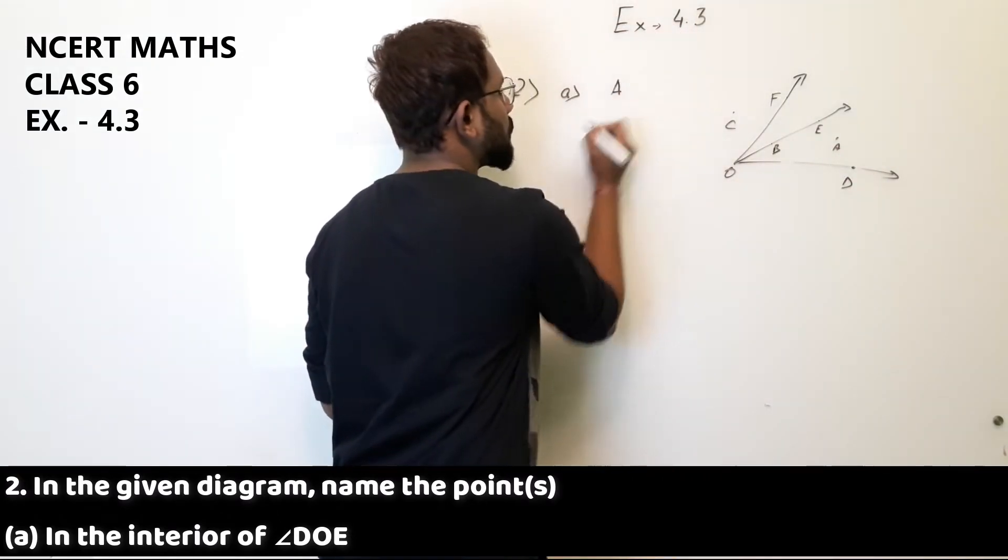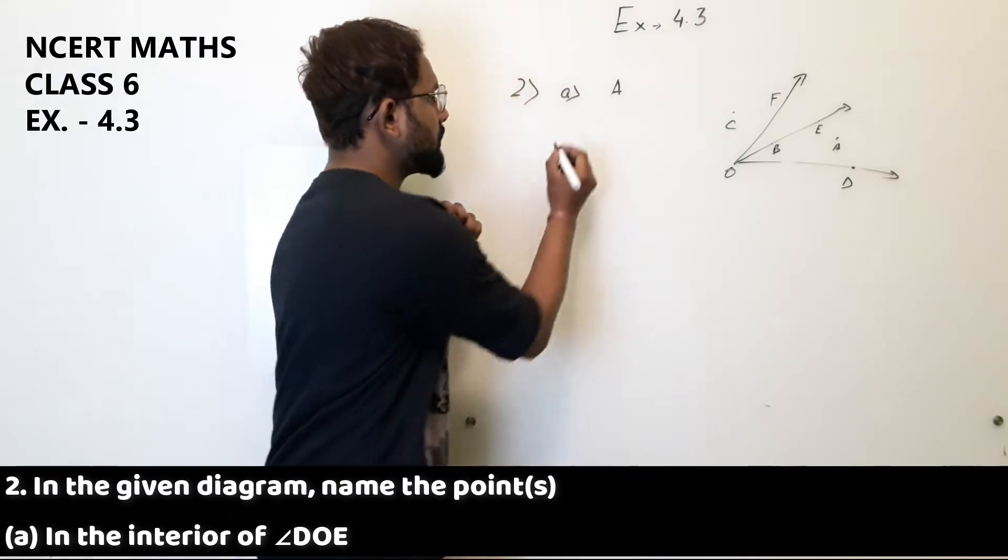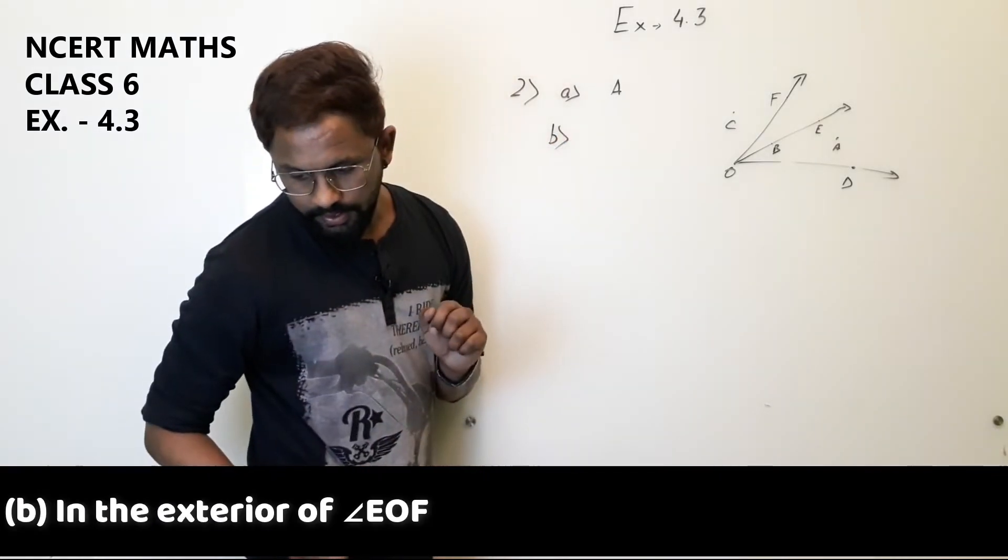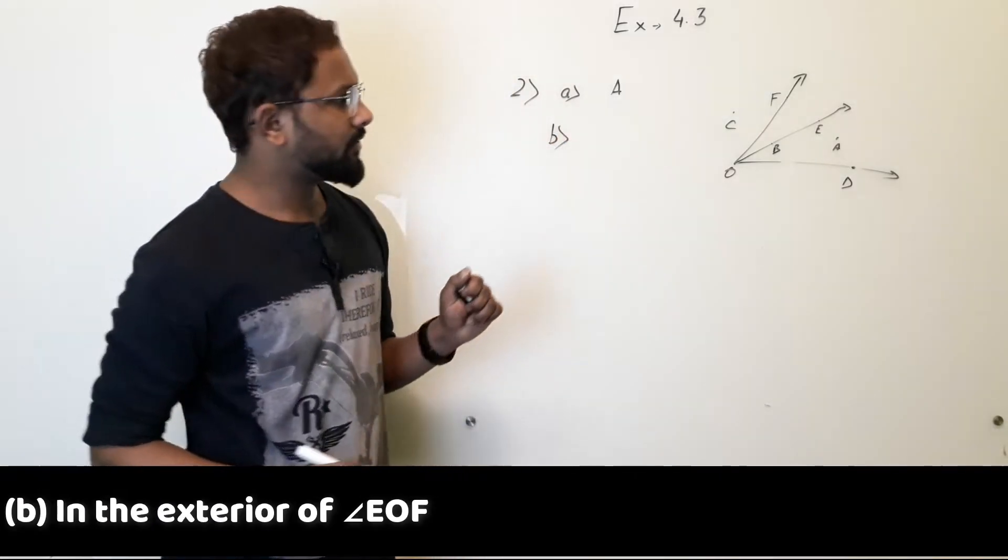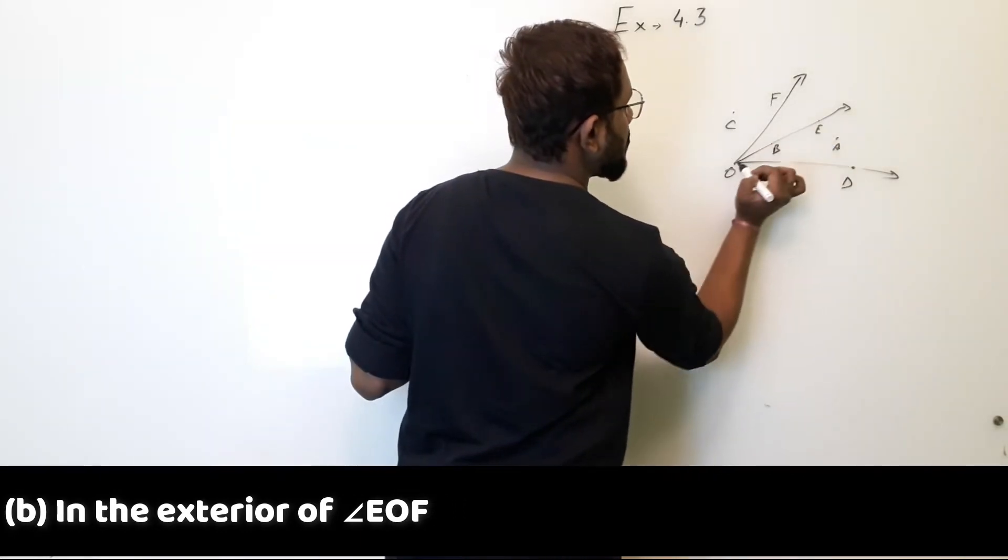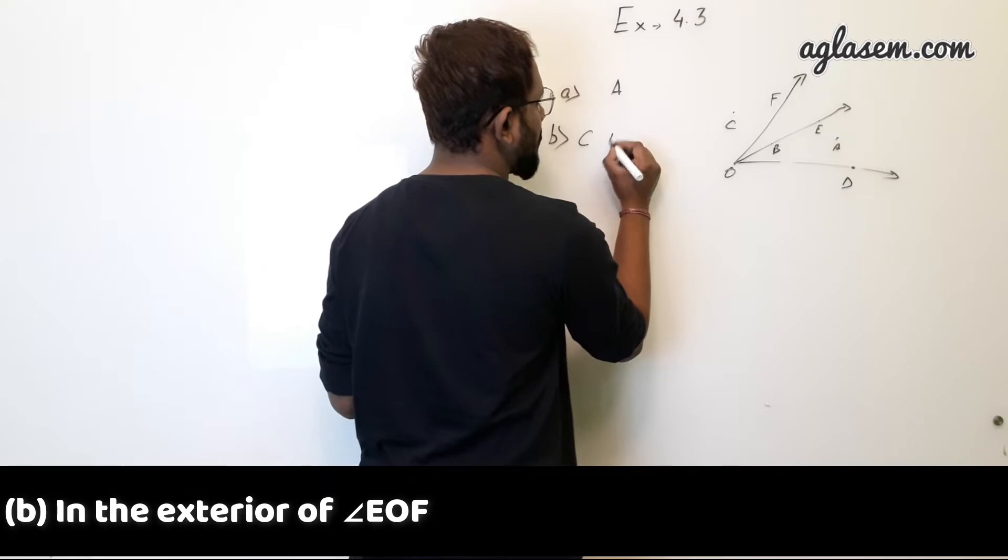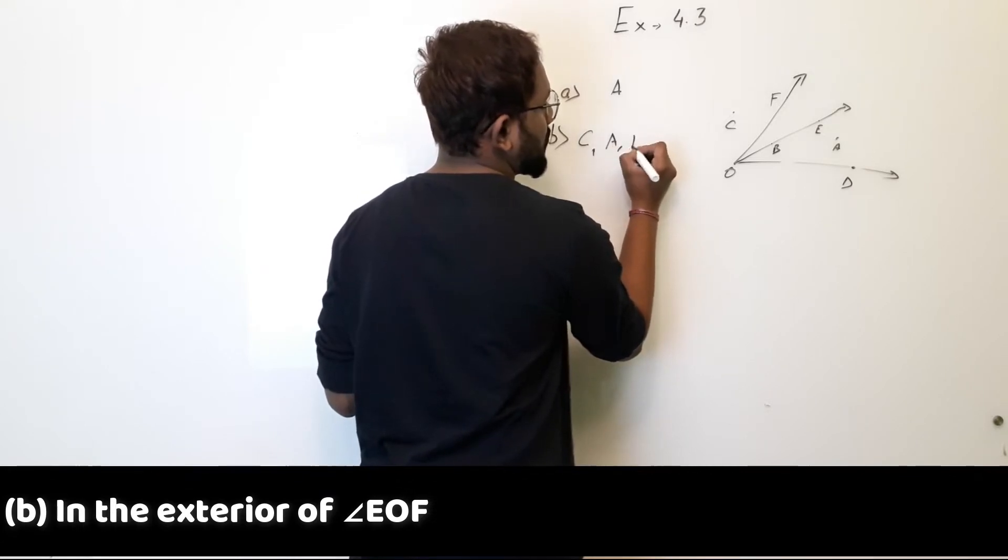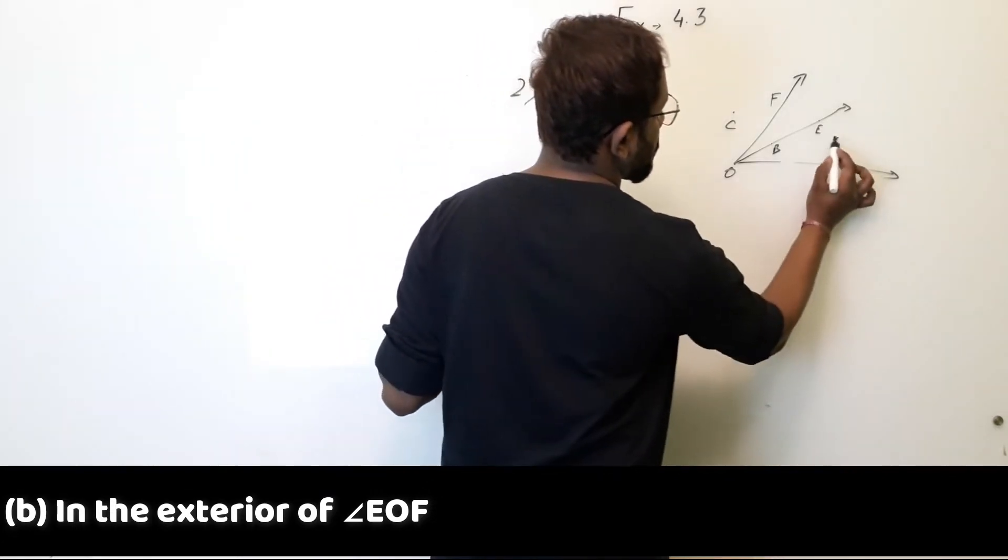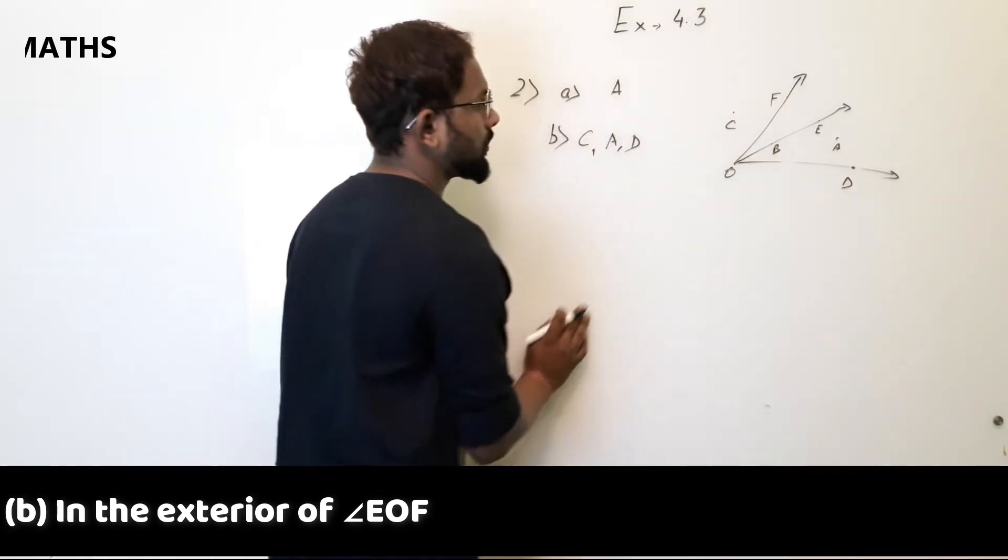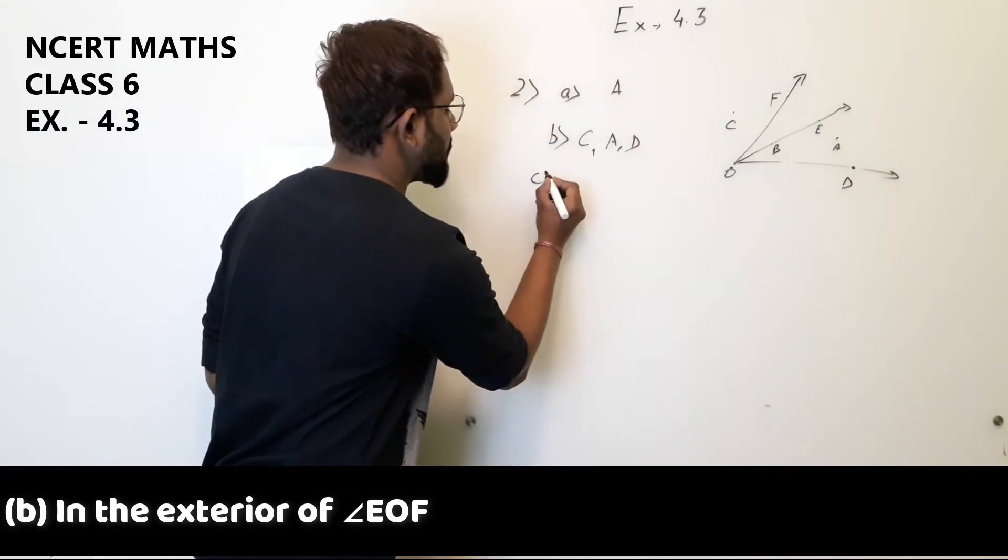Part B, in the exterior of angle EOF. Angle EOF, the exterior points are C, A, D, D and C.